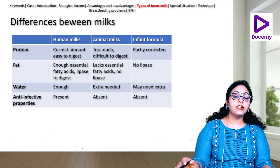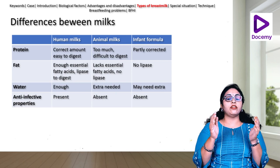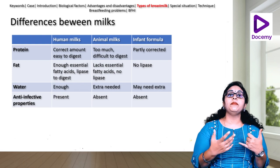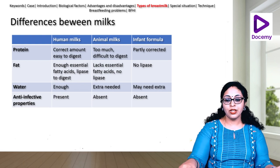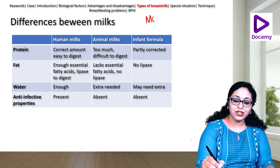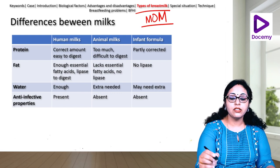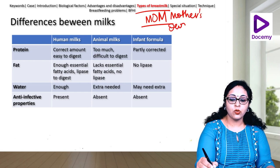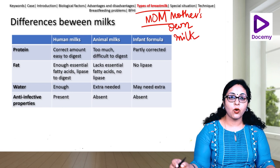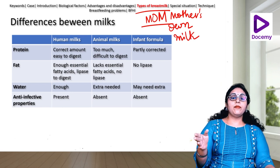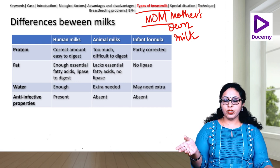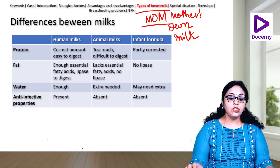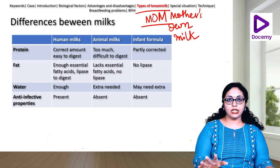Let us look at the different types of milk a human baby consumes. One is the mother's own milk — abbreviated as MOM, an MCQ point. Babies can consume human milk, formula feeds, or animal milks, most commonly cow's milk. Let's compare these three types.